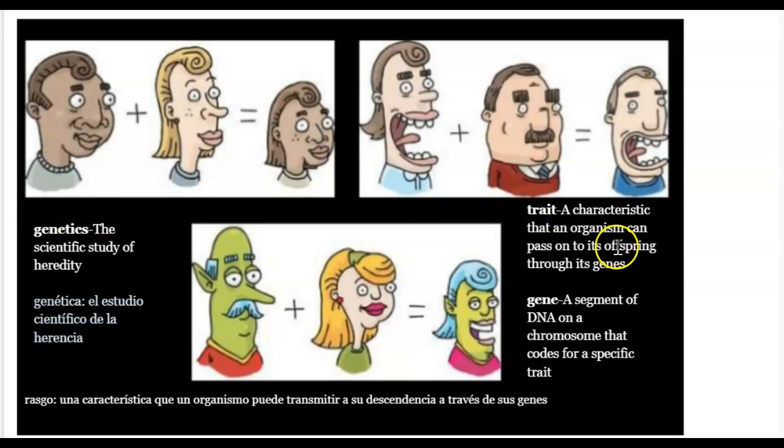Offspring means babies or children. So this is parents, the father, the mother, child, offspring. Here are some more parents. Mother, father, child, offspring.